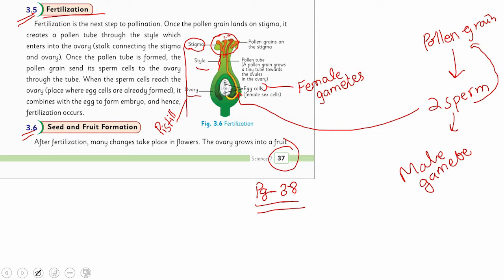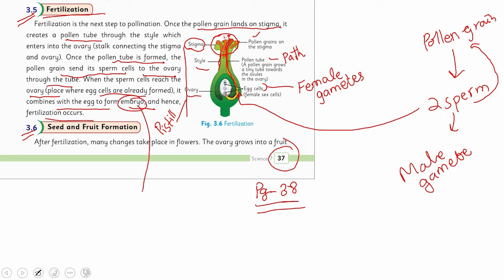For successful fertilization, the sperm must combine with the egg cell present in the ovary. Egg cells are protected by the ovule, just as sperm is protected by the pollen grain. When pollen grains fall onto the stigma as a result of pollination, a pollen tube develops through the style and reaches the ovary. The pollen grain then sends its two sperm cells down to the ovary through this tube, acting as a path for their transference. When sperm cells reach the ovary, they combine with the egg to form an embryo — and fertilization occurs.